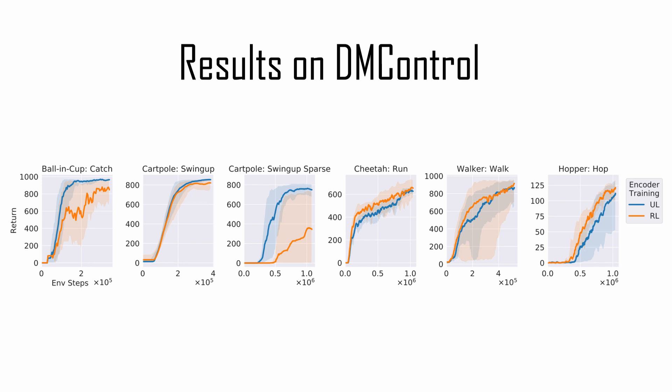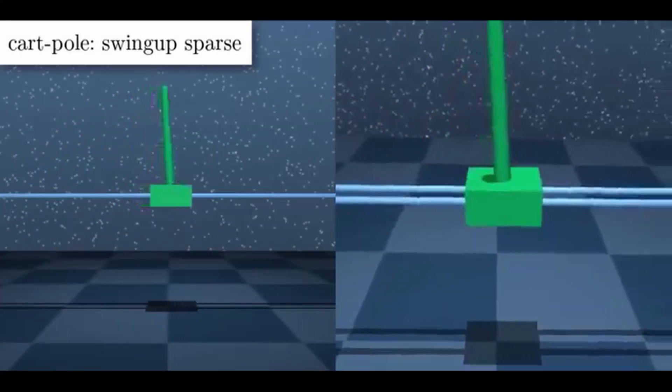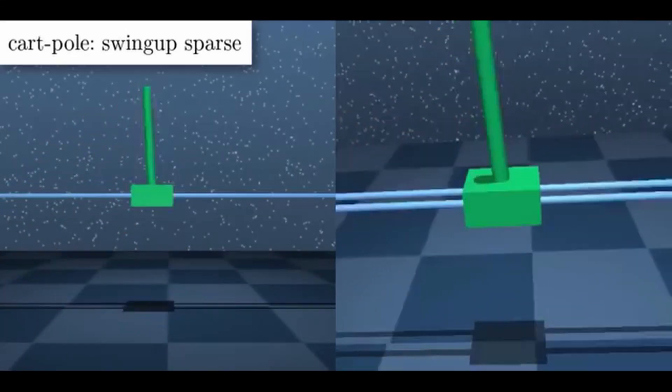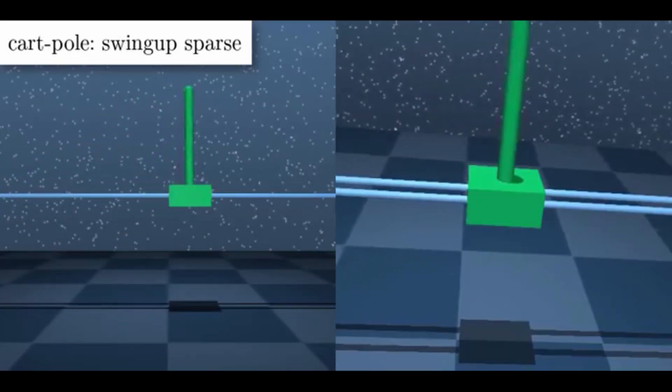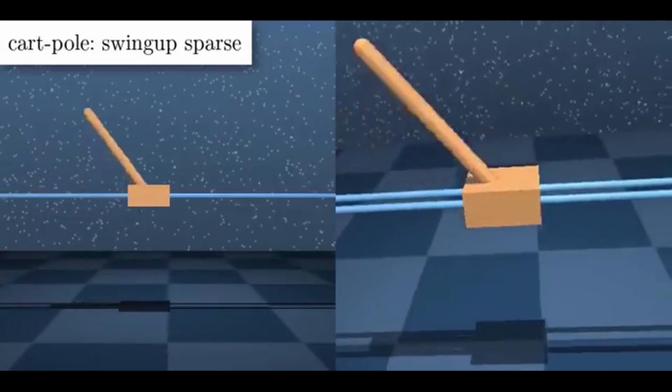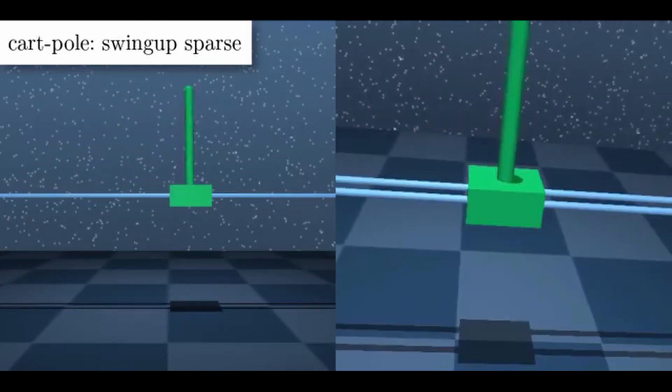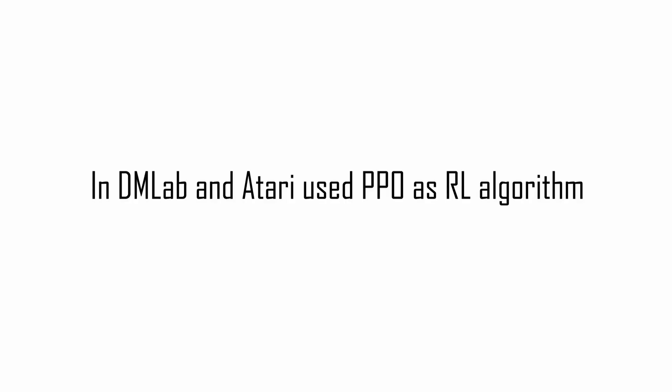The results are comparable, except for cartpole swing up sparse, in which the role of the unsupervised learning algorithm has a substantial importance, highlighting the assumption that unsupervised learning performs better on sparse reward regimes.